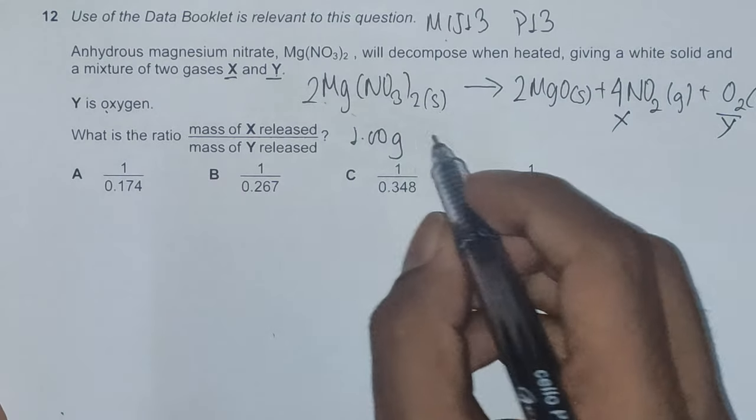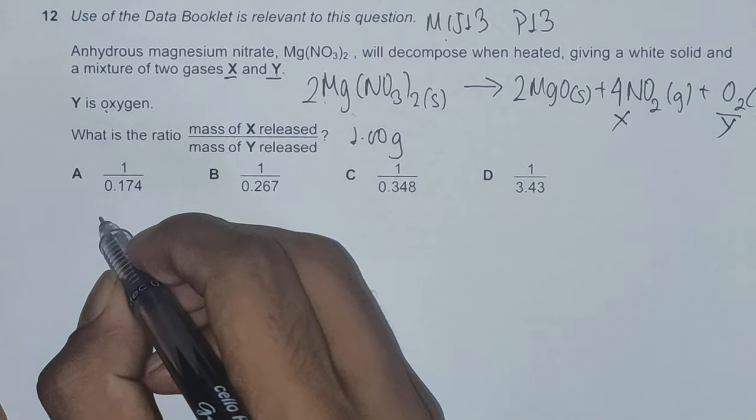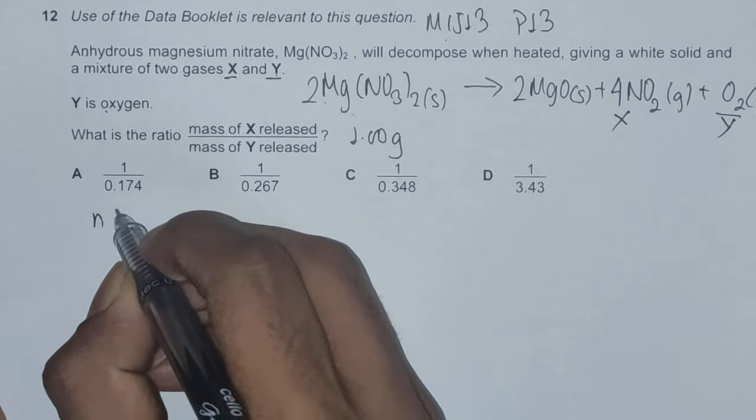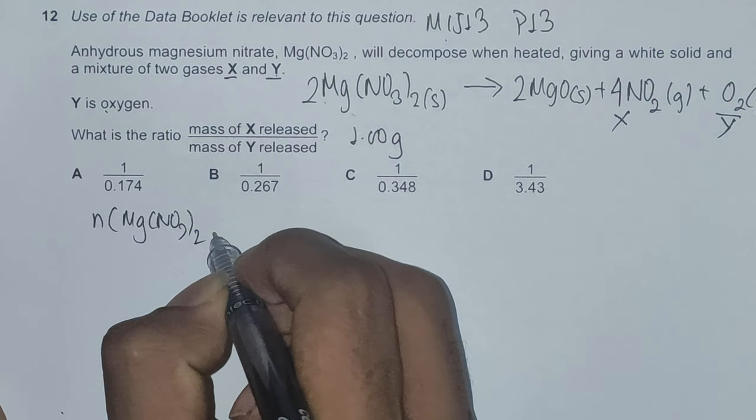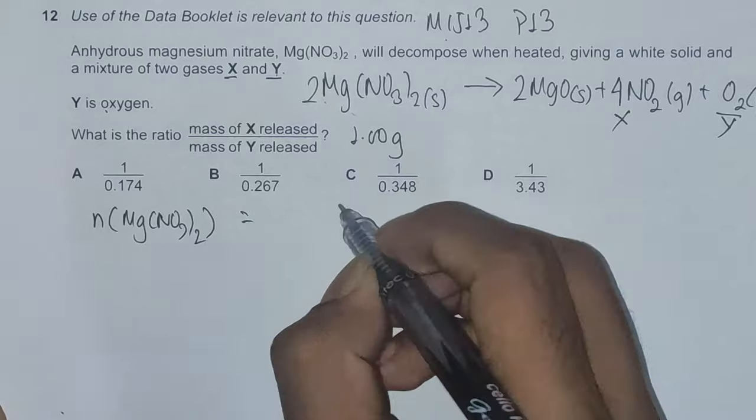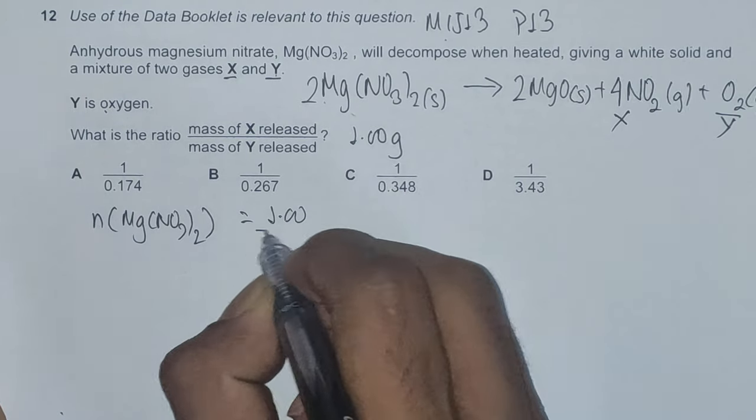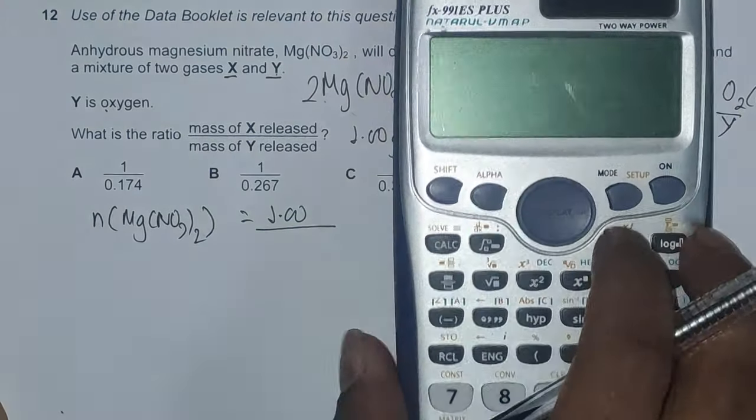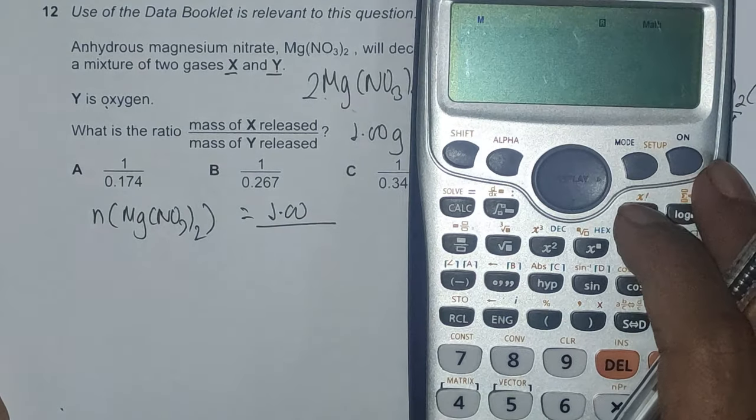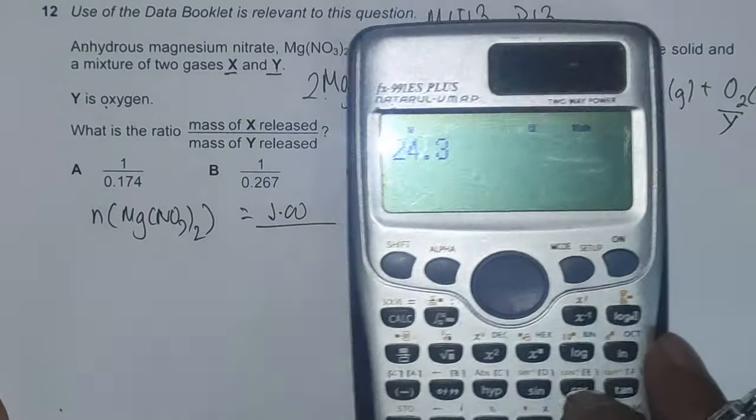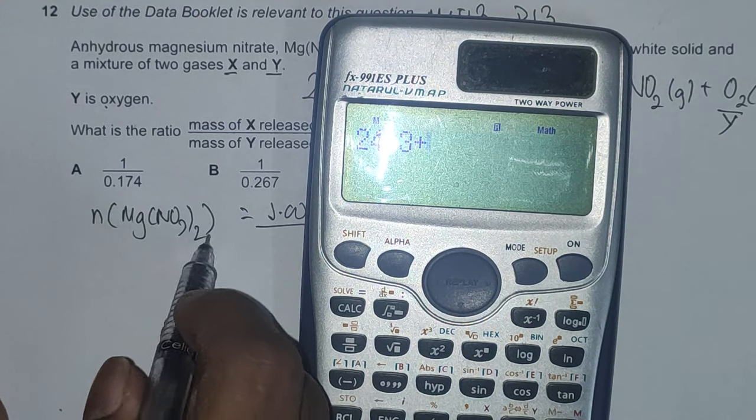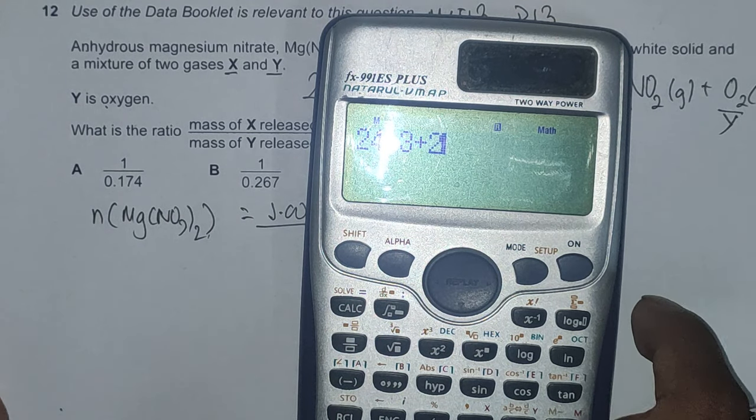Writing the total moles formed, we have moles of magnesium nitrate as Mg(NO3)2. This is 1.00 divided by its MR.